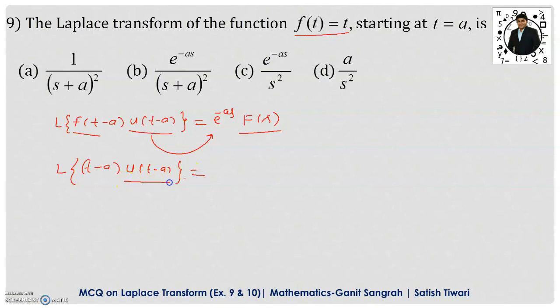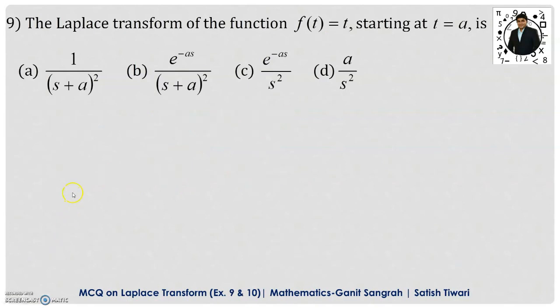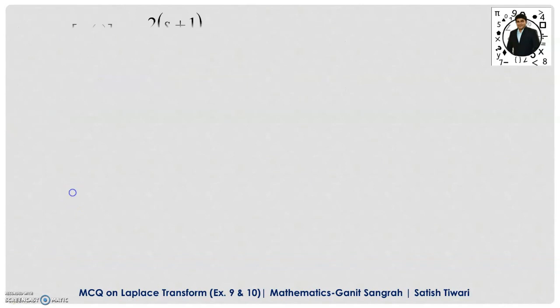For u(t − a), we write e^(−as), then the Laplace transform of t only — excluding the minus a — which is 1/s². So option C is correct.